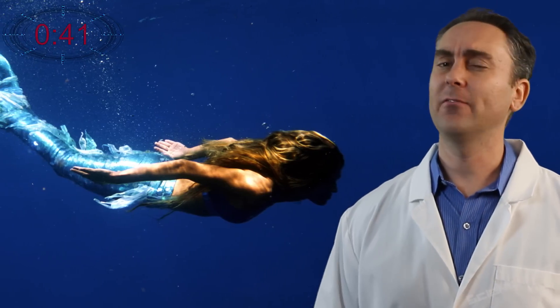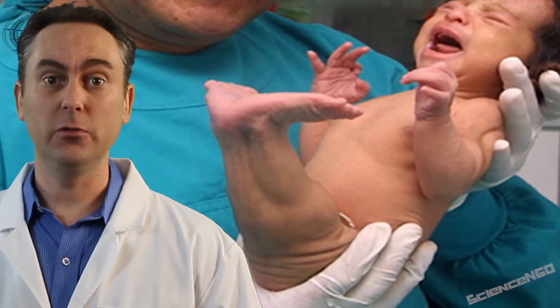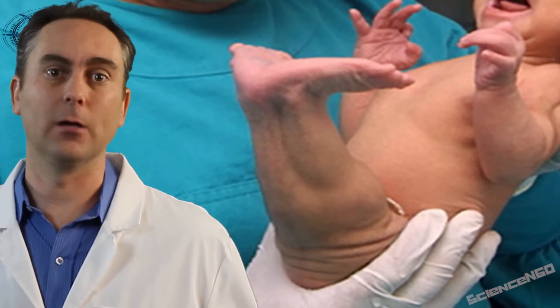But even the first myth probably came from a real-life birth defect that's been nicknamed mermaid syndrome. Here are babies born with their two legs fused together, but still with two feet, making it look like a fin or a tail.